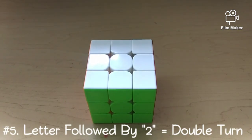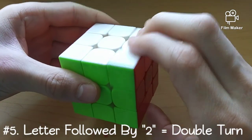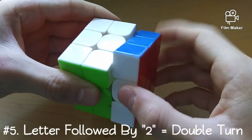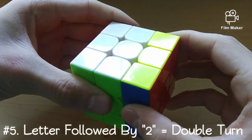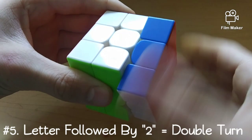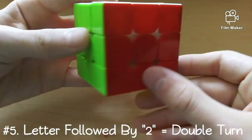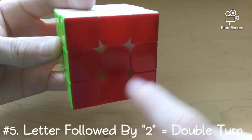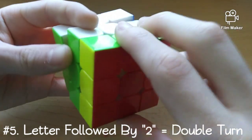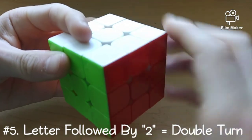And finally, for rule number 5, if you see a 2 after the letter given, you will know that you have to turn the layer twice. This is called a double turn. Now, it doesn't matter if you turn it clockwise, or counterclockwise, because since there are 4 sides on a square, 2 is half, so it will get to the same spot either way.